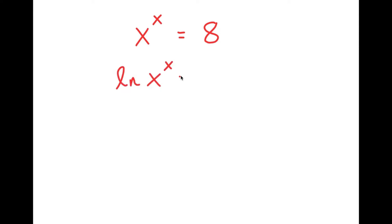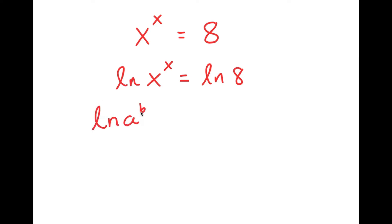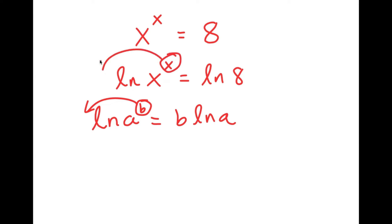Taking the ln of both sides gives ln(x^x) equals ln(8). A helpful property of logarithms is that if you have ln(a^b), you can move the exponent to the front, turning it into b times ln(a). So ln(x^x) becomes x times ln(x), giving us x times ln(x) equals ln(8).